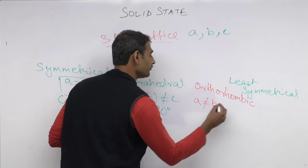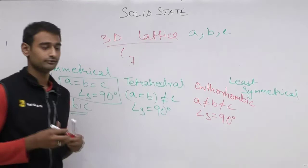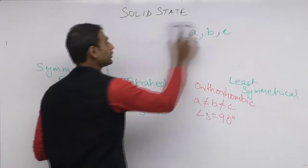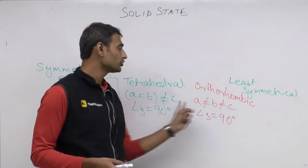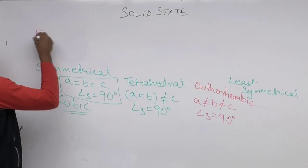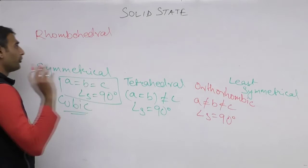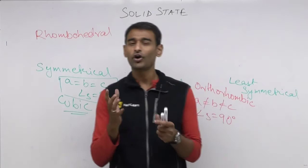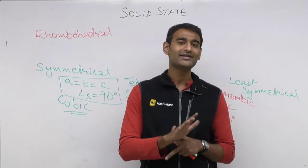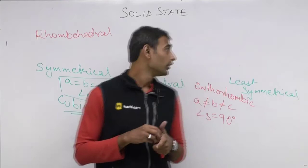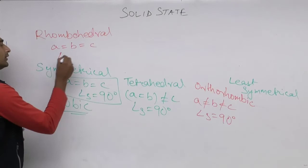The third type of system is one in which none of the sides are equal but all angles are 90 degrees — this is called orthorhombic. So: cubic has all sides equal and all angles 90; tetragonal has two sides equal and all angles 90; orthorhombic has no sides equal but all angles 90. The fourth system is rhombohedral — imagine distorting a cube in all three axes: the sides remain equal but none of the angles are 90 degrees.